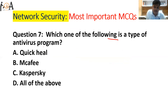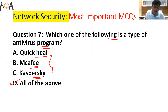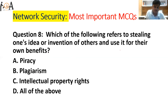Question number seven: which one of the following is a type of antivirus program? Quick Heal, McAfee, and Kaspersky — I hope everybody knows these very well-known antivirus software programs. All of these are types of antivirus software.